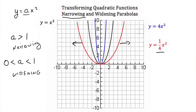If you're multiplying x squared by a number greater than 1, say 4, you're going to be narrowing your parabola. The way to think of this is that you're increasing or decreasing your y values for every value of x. So again, if you want to widen your parabola, multiply it by a number less than 1. And if you want to narrow your parabola, multiply it by a number greater than 1.